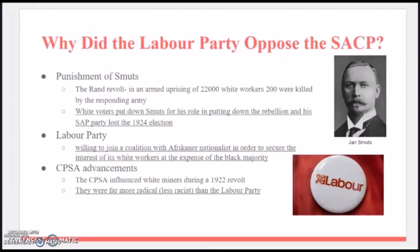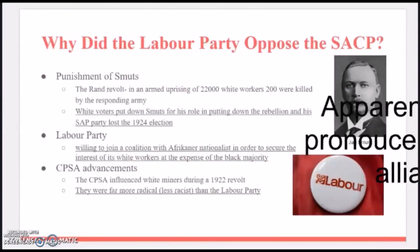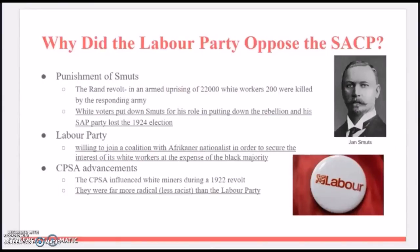So why did the Labor Party oppose the SACP? The Rand Revolt was an armed uprising of 22,000 white workers, and 22 were killed by the responding army. White voters punished Smuts for his role in putting down the rebellion, and the SACP lost the 1924 election.